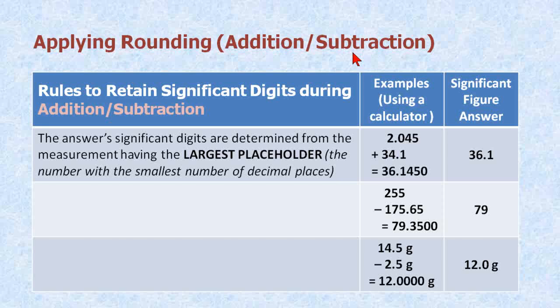Applying rounding during addition and subtraction is slightly more complex. The rule for that is the answer's significant digits are determined from the measurement having the largest placeholder. You ask, what the heck's a placeholder? These are placeholders. This is a number line. This number 5 is in the 1,000th placeholder, the 4 is in the 100th placeholder, the 0 in the 10th, and then the 2 is in the 1's placeholder. So we look for the largest placeholder, and this is the number that has the largest placeholder. So 34.1 controls the number of significant figures. When we add these numbers together, we get this on a calculator, and our significant figure answer is this, 36.1.